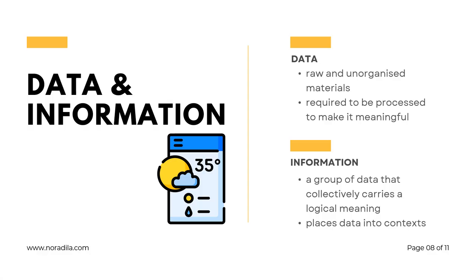Previously we mentioned the terms data and information. Data and information have different meanings. Data is raw and unorganised material that is required to be processed to make it meaningful. Information, on the other hand, is a group of data that collectively carries logical meaning and places data into context. Information depends on data where the data needs to be processed, organised, structured, or presented in a given context to make it useful.